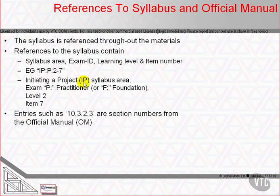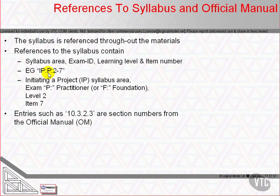One of the processes we haven't yet seen in detail. Then there's an exam ID, which can only be P for practitioner or F for foundation, a learning level, which we will explain when we get to looking at the exam make-up, and an item number, which simply runs in sequence to a low number — normally less than 10. So any time you see something like SU:F:3-1, that would be starting up a project, foundation, question level 3, number 1.